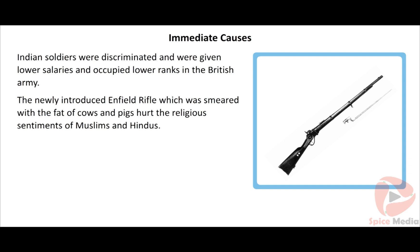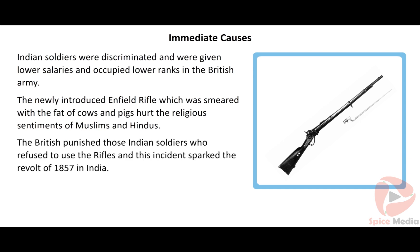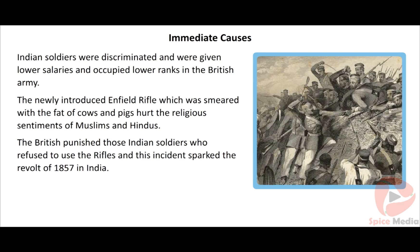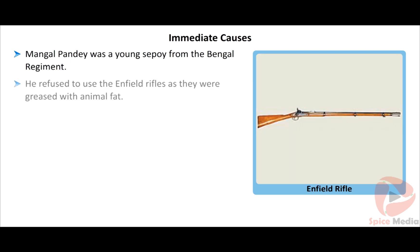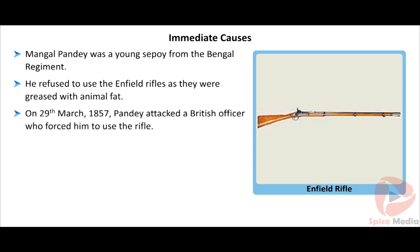The cartridges of the Enfield rifles were smeared with the fat of cows and pigs, and the paper covering them had to be bitten off before loading. Muslims had religious hatred towards pigs, and Hindus had devotion to cows. So Hindu and Muslim soldiers refused to accept the greased cartridges. The British punished those Indian soldiers who refused to use the rifles, and this incident sparked the revolt of 1857 in India.